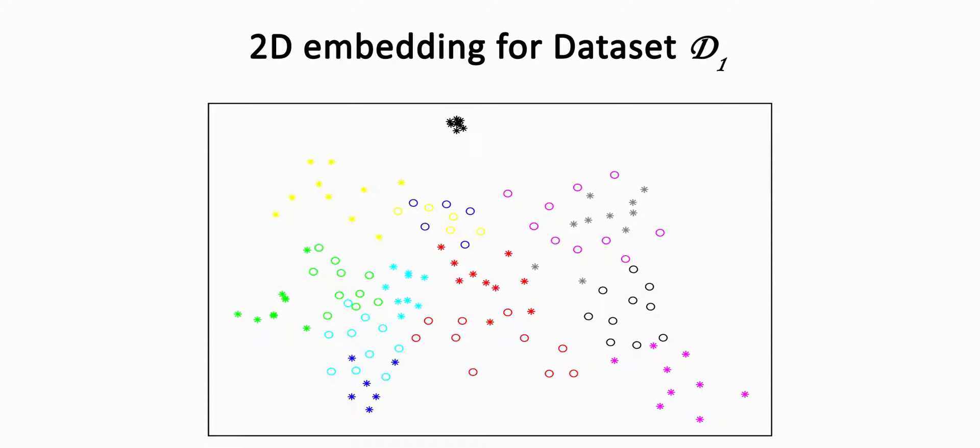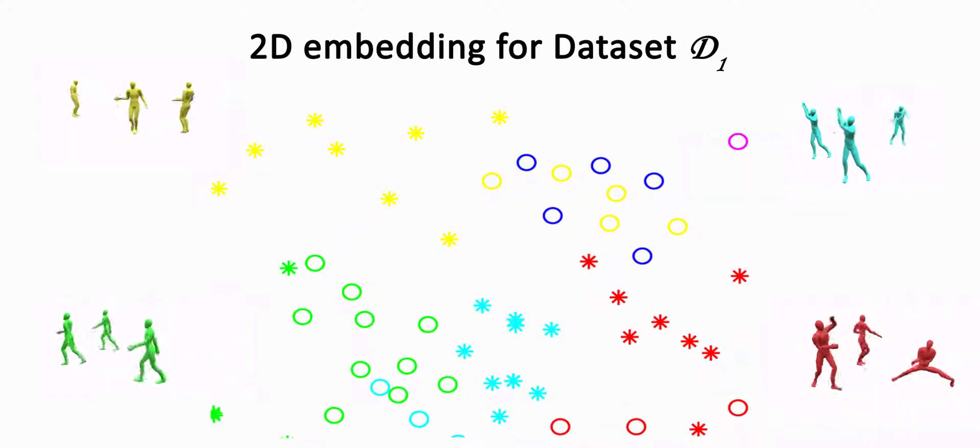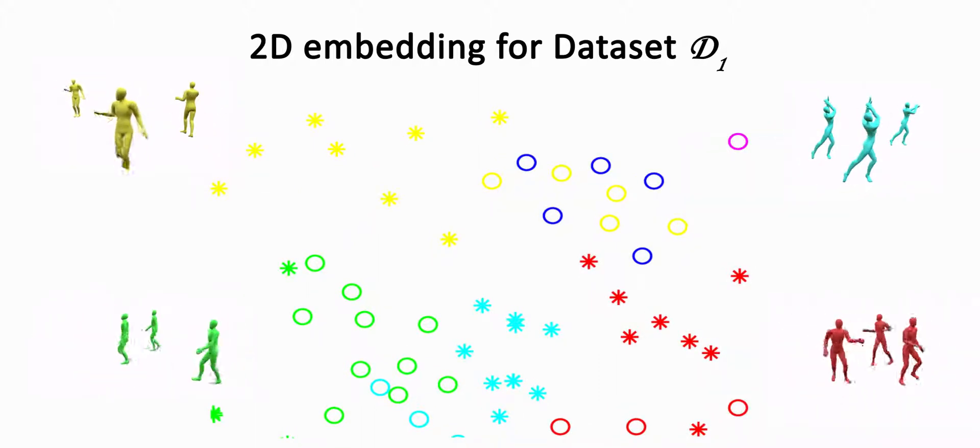Here we show the 2D embedding of motion clips achieved by comparing their signatures. Observe that contextually similar motions are placed close to each other.